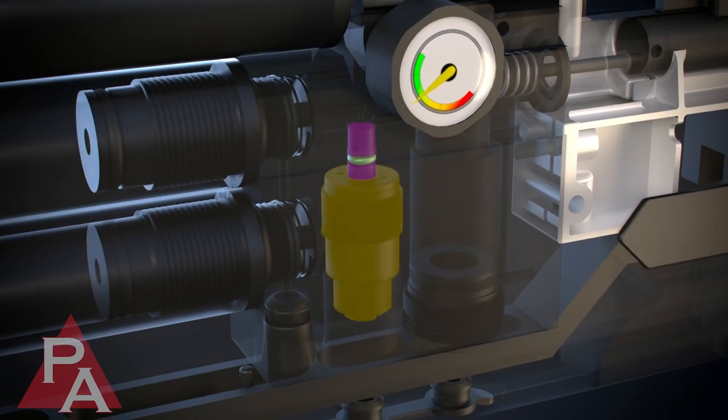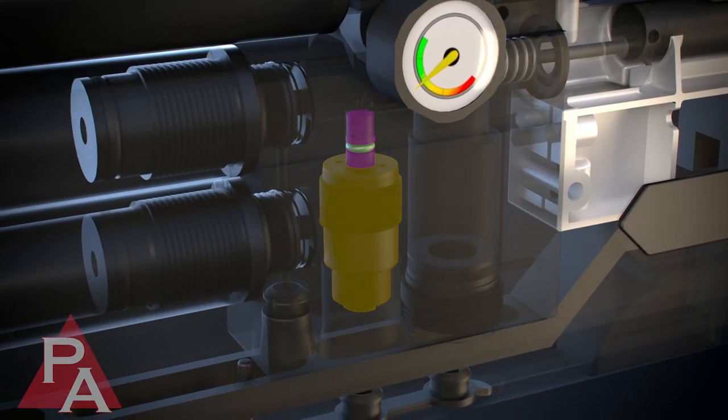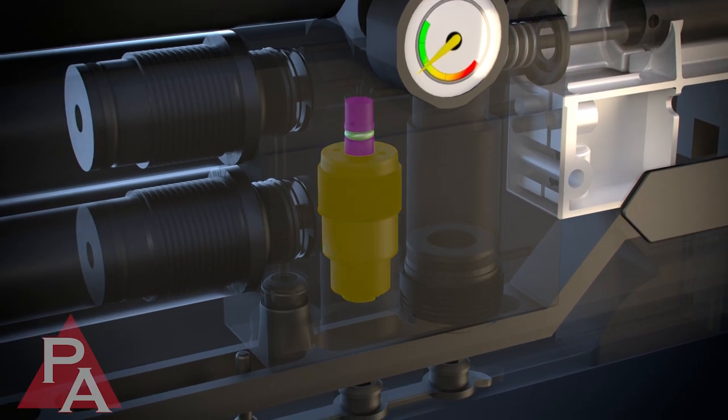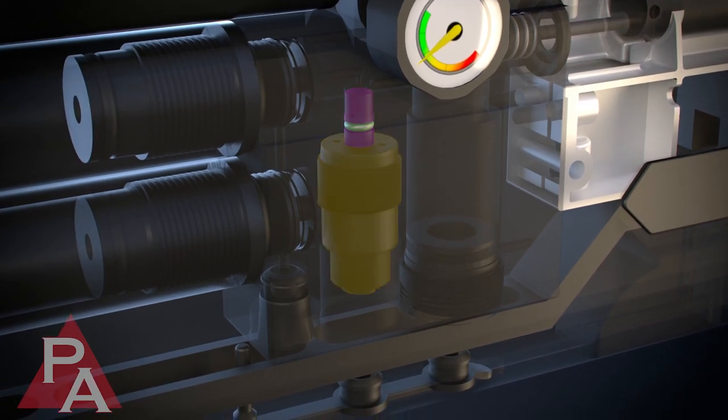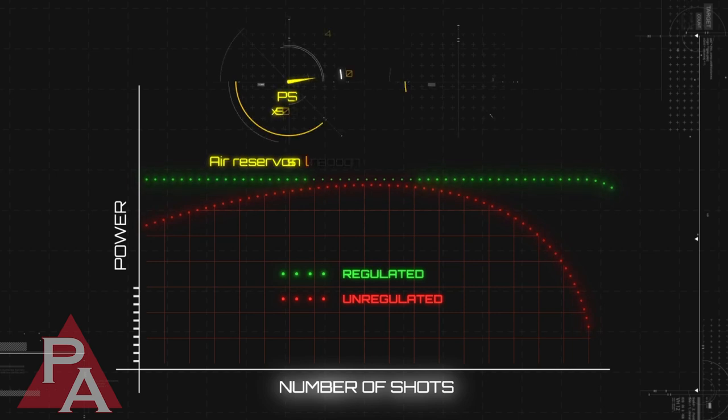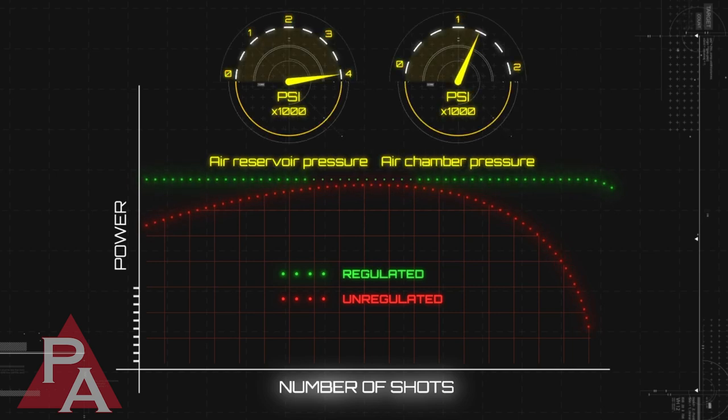A regulated PCP offers what is known as a sweet spot that extends from the first to the last shots of the usable shot range. In some cases, because a regulator deals with air delivery more efficiently, the rifle also returns more shots between fills.